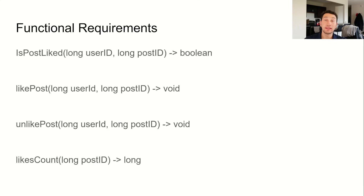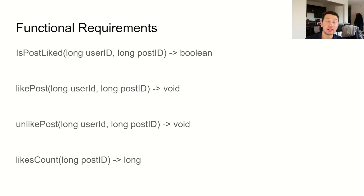In a problem like this we need to support four main API endpoints. The first is for a user to see whether or not they've liked a post. The second is for a user to like a post. Next, a user can attempt to unlike a post. And then finally we need to be able to get the count of likes per post. By implementing these endpoints we'll satisfy our functional requirements.